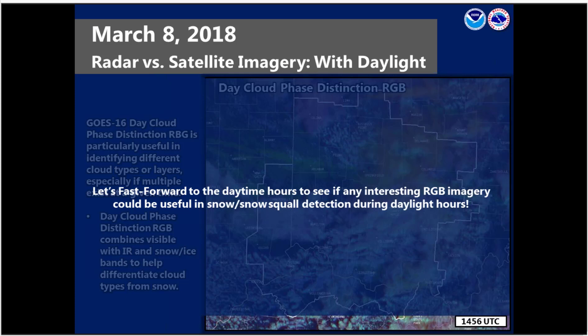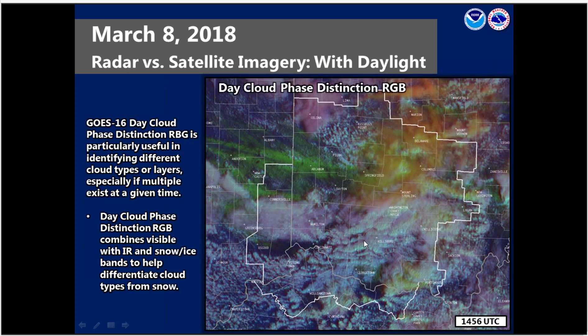Let's fast forward to the daytime hours to see if there's any interesting imagery that can be used for snow squall detection during daylight, because the most impactful time of this event was prior to sunrise. We've now fast-forwarded to 15Z, and this is where satellite imagery can be really useful. In particular, we took a look at the GOES-16 Day Cloud Phase Distinction RGB. It was particularly useful in identifying different cloud types and layers, especially when multiple layers exist at a given time. The Day Cloud Phase Distinction RGB combines visible with IR and the snow-ice band to help differentiate cloud types from snow.